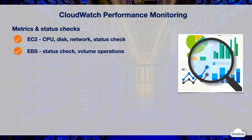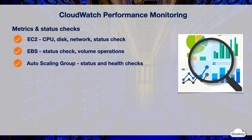CloudWatch can monitor EBS volumes using volume metrics such as volume operations, performance and fast snapshot restore. CloudWatch can also perform instance status and health checks in an Auto Scaling group so that Auto Scaling can automatically launch or stop EC2 instances.